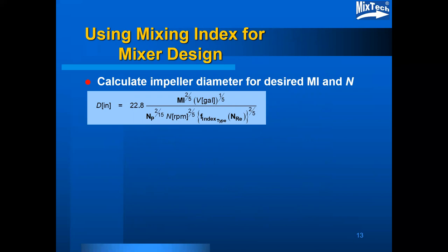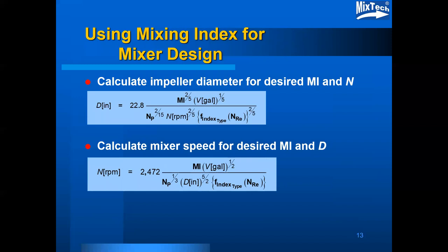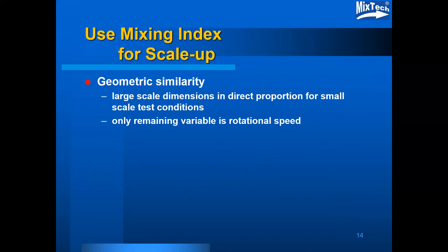Using the mixing index is also beneficial in helping to do mixer design. By rearranging the calculation for mixing index, an impeller diameter can be calculated based on a desired mixing index and a rotational speed, along with the volume and power number. This way, picking one or two variables allows you to find what the other one is fairly directly for design purposes.